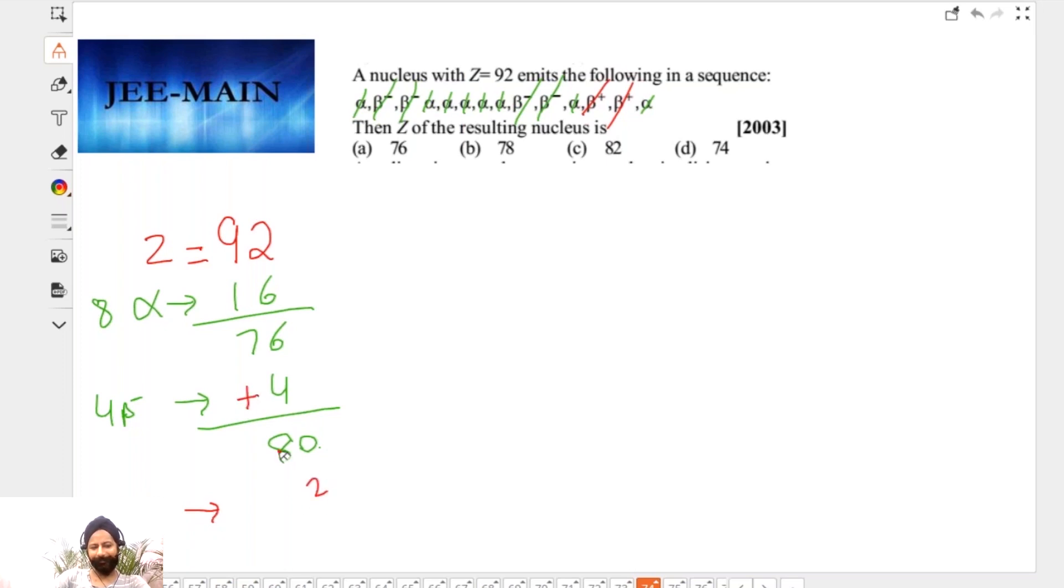Uske baad dekho, what happens next is two beta positives are gone. Two beta positives chale gaye, so what you're left with, you subtract 2, so you end up with getting 78. Thik hai, everybody gets it? So answer is 78. Unless I have made a mistake, just point it out. If there is a mistake, point it out please. I might have made a mistake, I'm not like a machine, I will make mistakes. Clear hai? This was 2003. See, these are the kind of questions. Obviously, the complexity of exam paper keeps increasing and we never know.